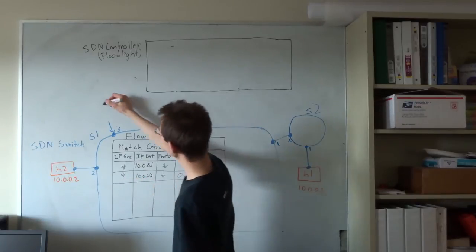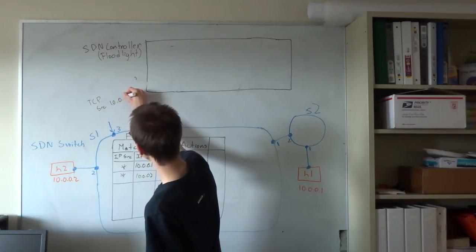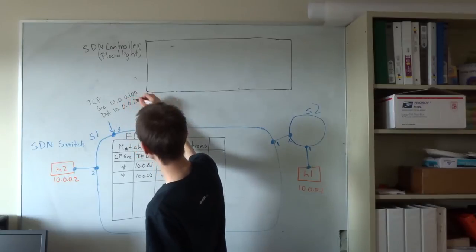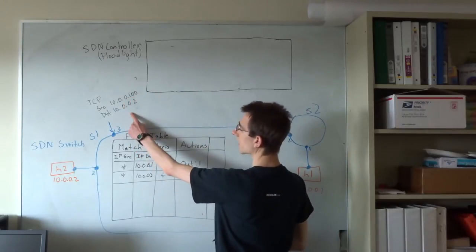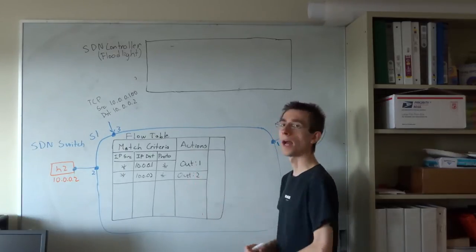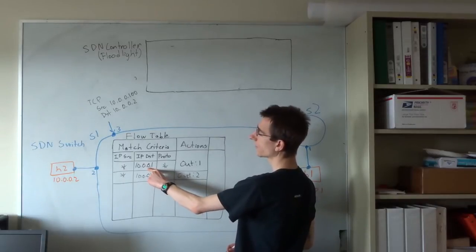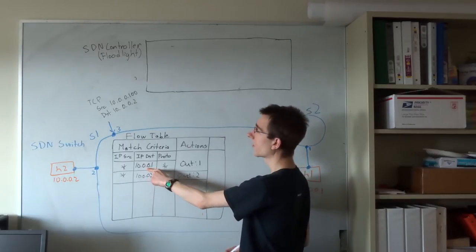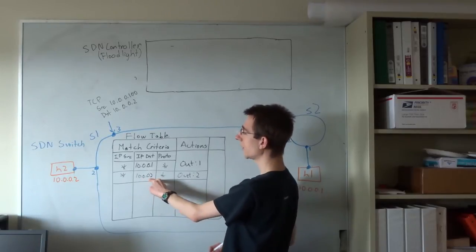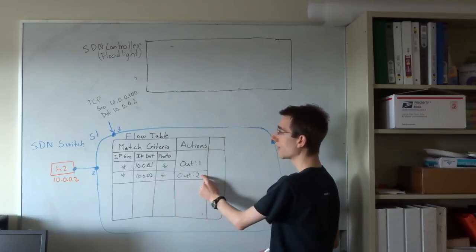Now, let's assume that we have a TCP packet whose source is 10.0.0.100 and whose destination is 10.0.0.2. When this particular packet comes in, we'll match it against the entries in our flow table and apply the actions for any entry that matches. The first entry is looking for packets going to 10.0.0.1, which this packet is not. However, it will match the second entry, which is looking for packets going to 10.0.0.2, and send the packet out port 2.